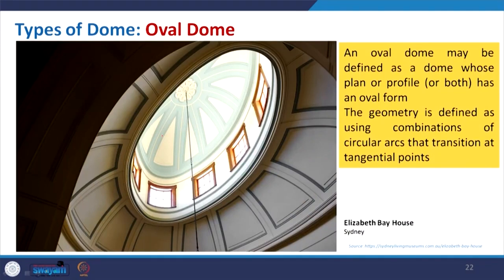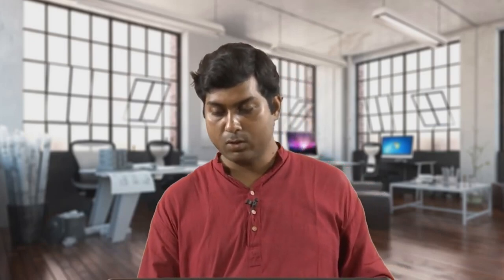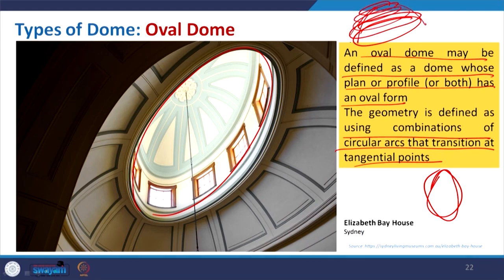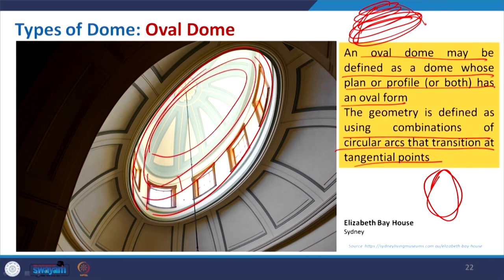Coming to the oval dome — it comes from the shape of an oval. For some interior spaces, the plan is changed from a circle to an oval profile. An oval dome may be defined as a dome whose plan or profile has an oval form. The geometry is defined using a combination of circular arches that transition at tangential points — basically we have one oval connected to another.